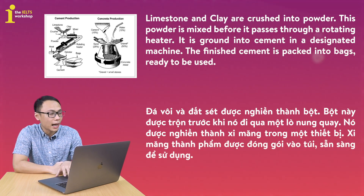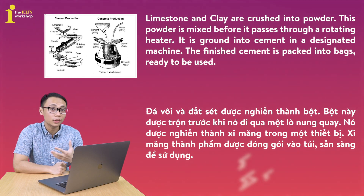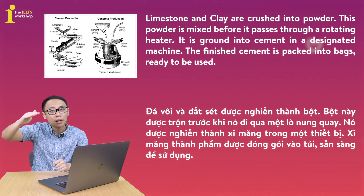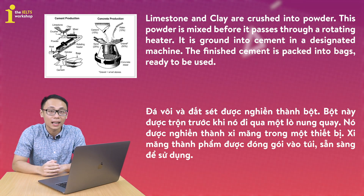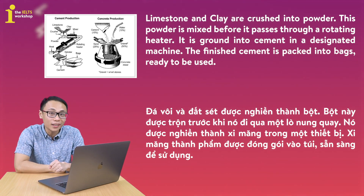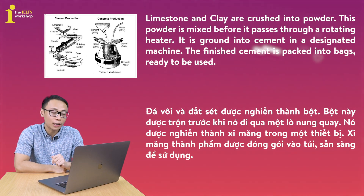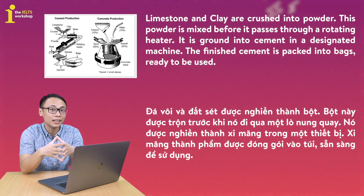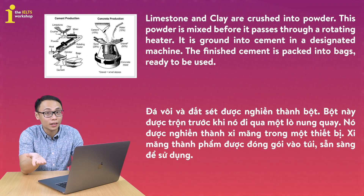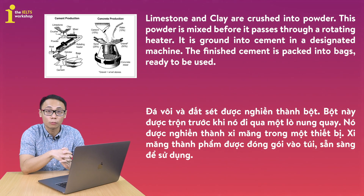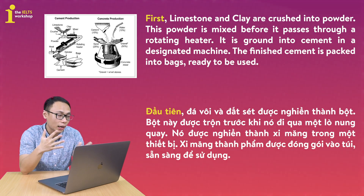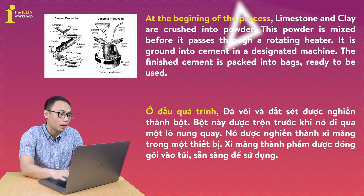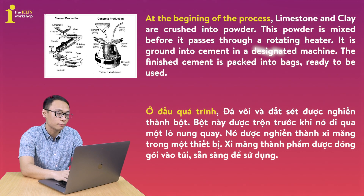Nhưng có vẻ như đang có một thứ gì đó hơi bị thiếu ở đây. Thường thì chúng ta sẽ thêm từ nào để biết rõ đây là 4 bước trong một công đoạn? Chúng ta sẽ dùng các từ nối ở vị trí đầu câu. Nếu bước đầu tiên, mình hay thêm từ nối là gì? Chúng ta có rất nhiều sự lựa chọn. Ở đây chúng ta có thể dùng "first", hay là "At the beginning of the process". Very simple.